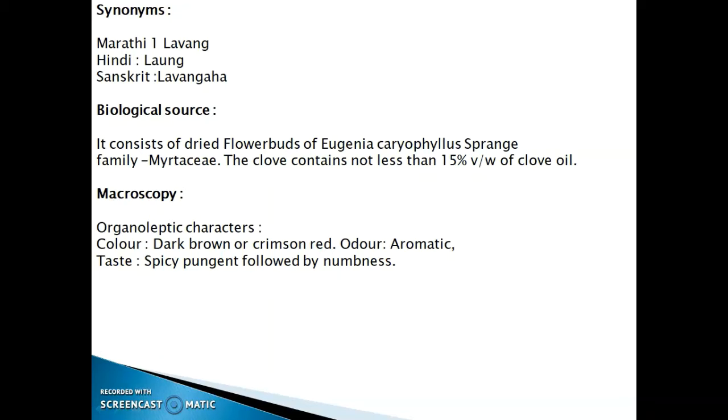Biological source: it consists of dried flower buds of Eugenia caryophyllus Spreng, family Myrtaceae. The clove bud contains not less than 15% weight by volume of clove oil.